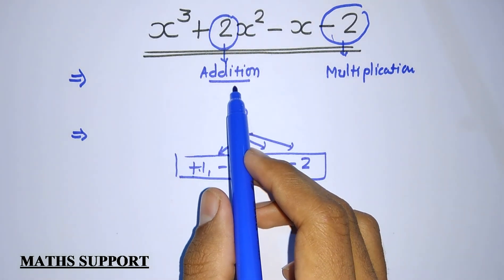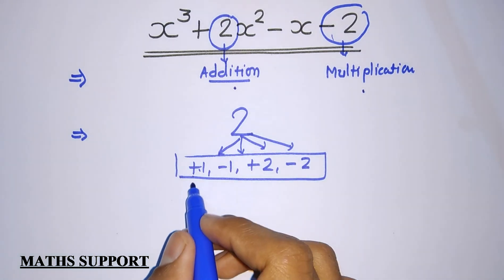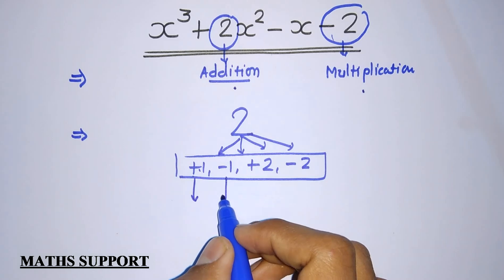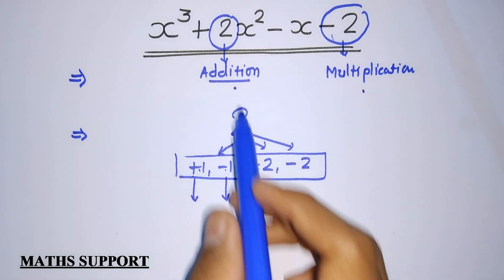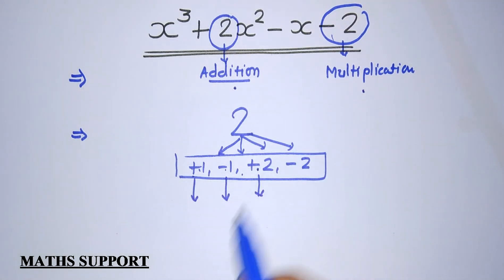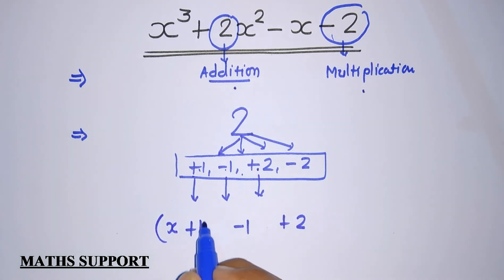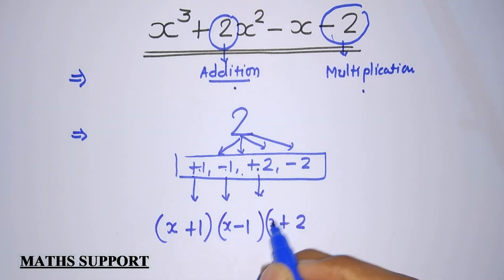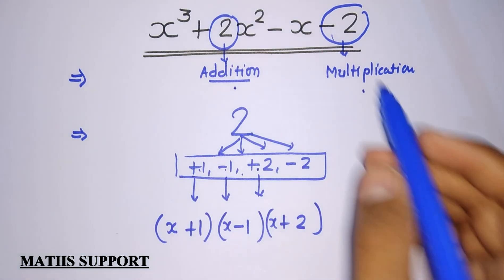We need to select three values such that their addition is plus 2 and multiplication is minus 2. We select plus 1, minus 1, and plus 2 — their addition is plus 2 and multiplication is minus 2. We then write these as factors with variable x in front, giving us (x + 1)(x − 1)(x + 2) as the factorization.